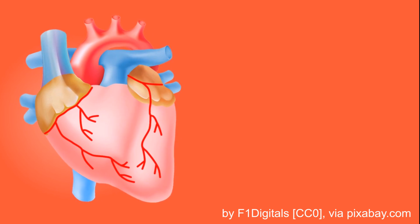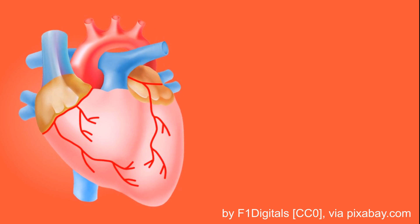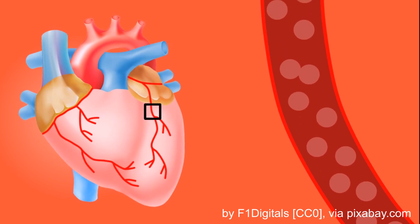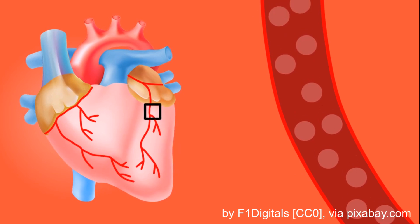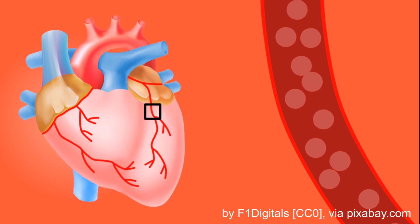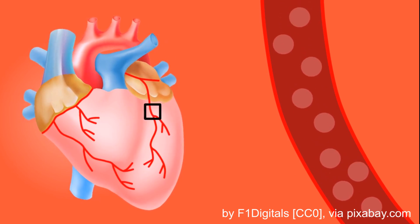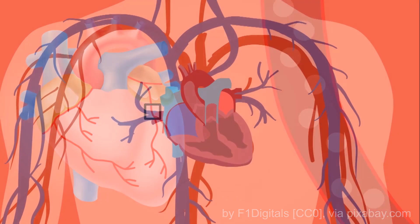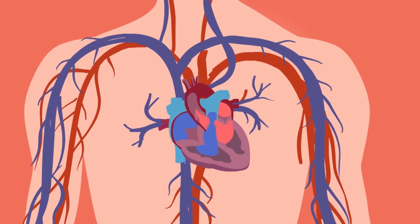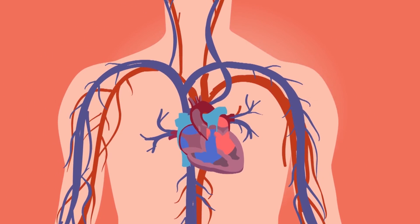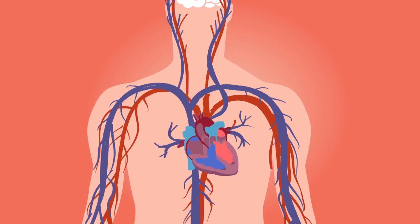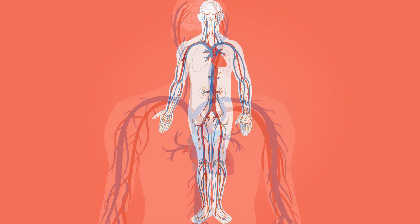Inside your body the blood flows in pipe-like structures, also called blood vessels, arteries and veins, which reach into all parts of your body. This way blood can travel all the way from your head to your toes.